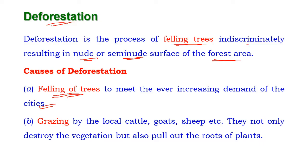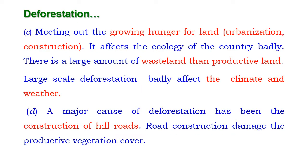Over-grazing by local cattle, goats, and sheep: they not only destroy the vegetation but also pull out the roots of plants, thereby destroying the forest cover. Growing hunger for land: for developmental activities like urbanization and construction, forest areas are destroyed. This affects the ecology of the country very badly, resulting in more wasteland than protective land.